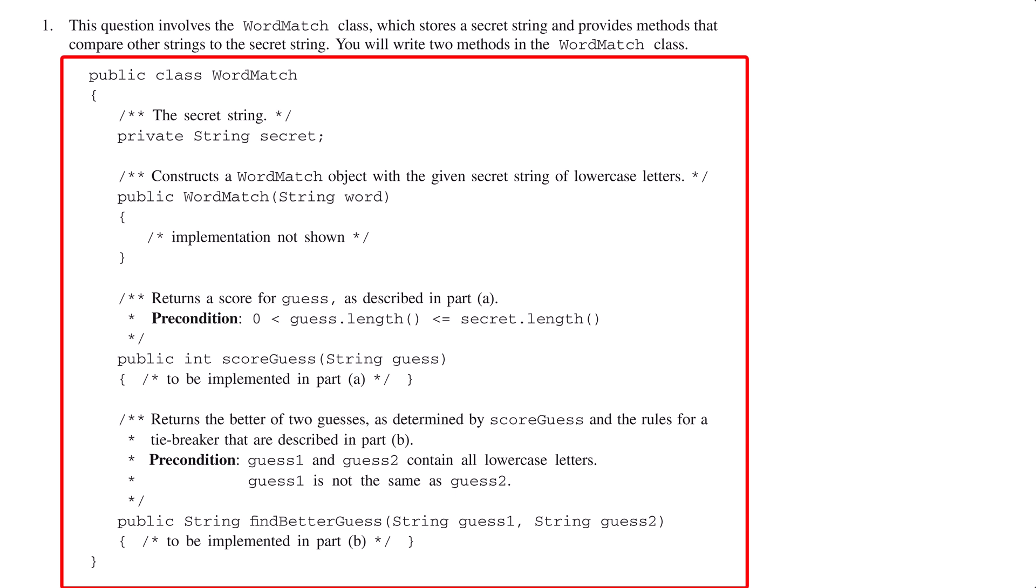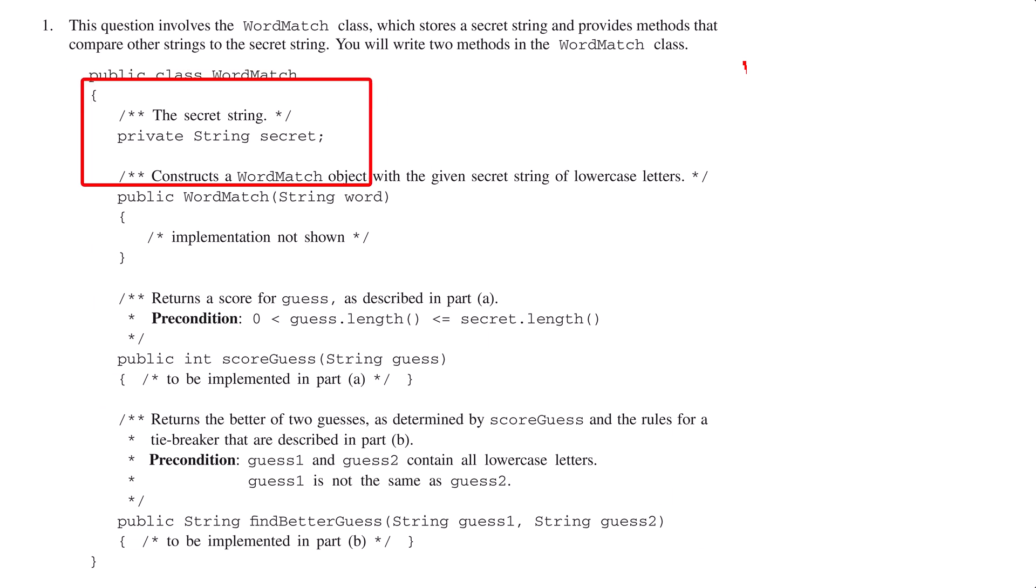This problem gives you the WordMatch class, which represents a game that stores a secret string and allows the user to guess the string. There's a string field called secret, which will hold the secret word. There is a constructor that will take a string parameter and use it to initialize the secret instance variable.